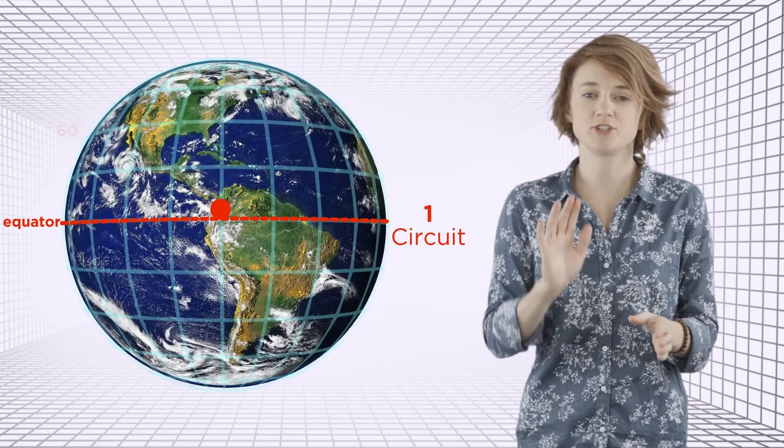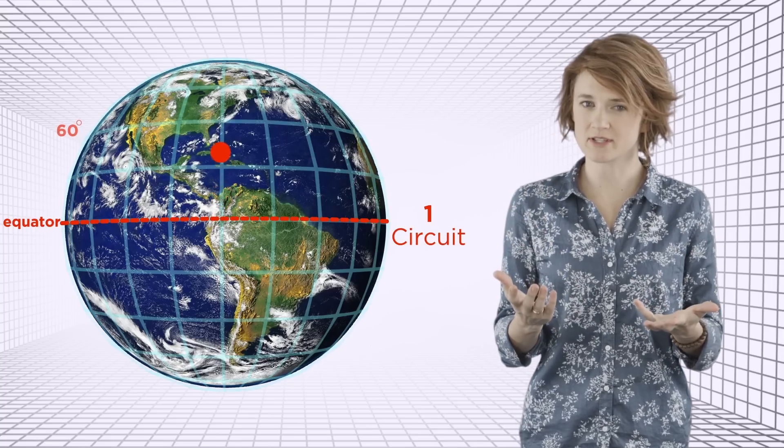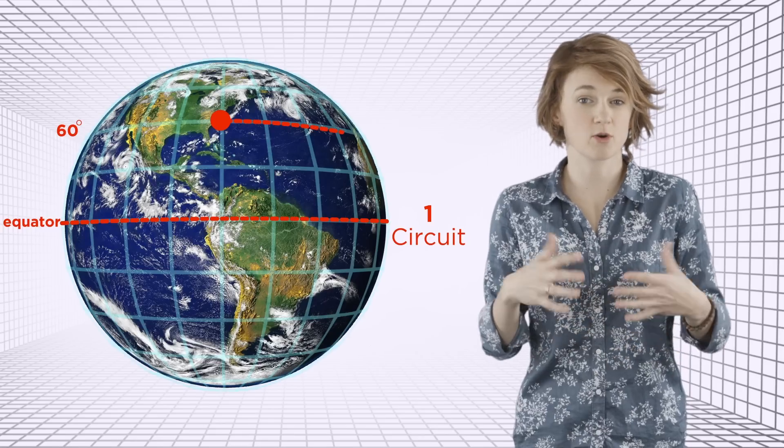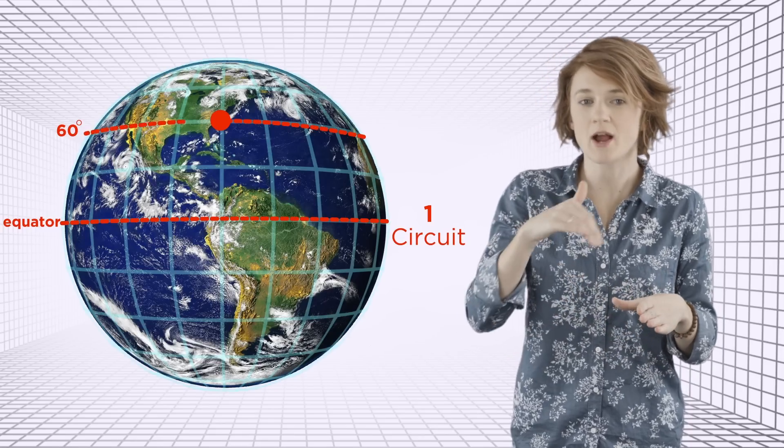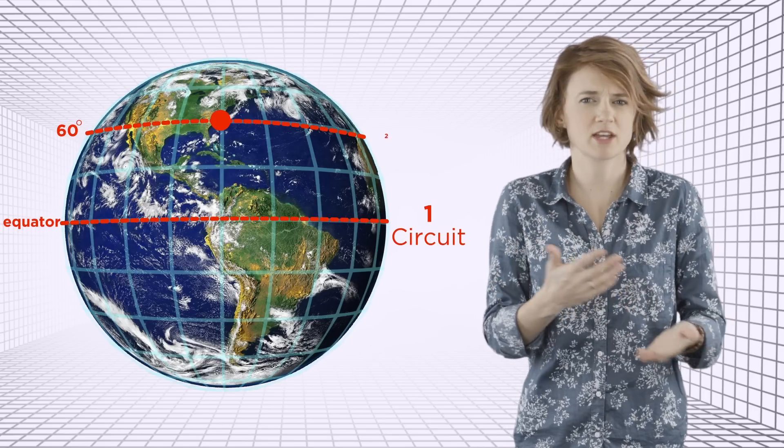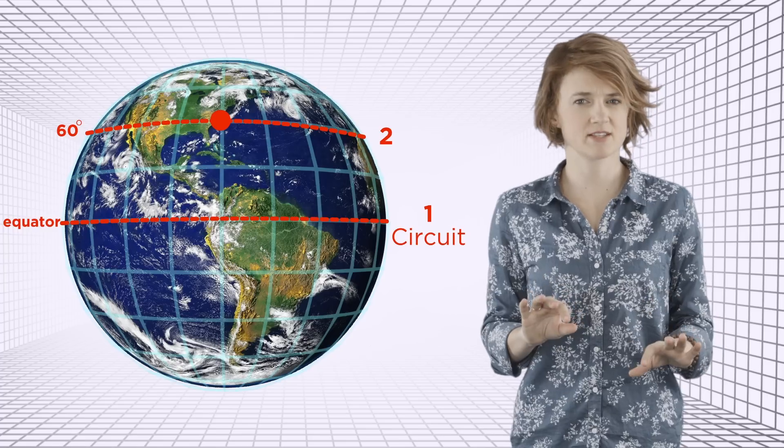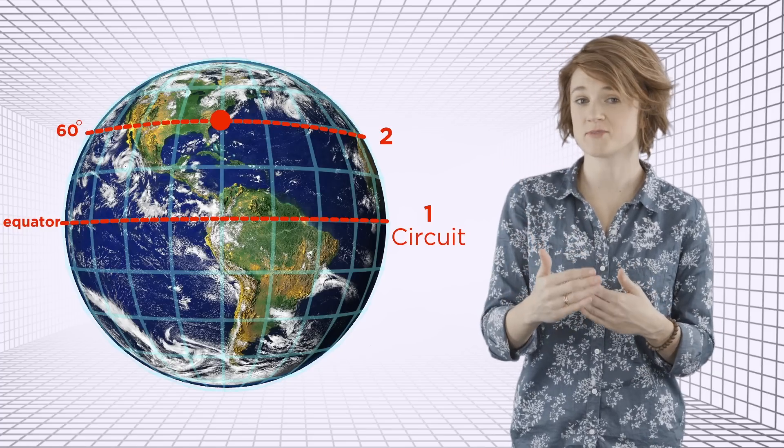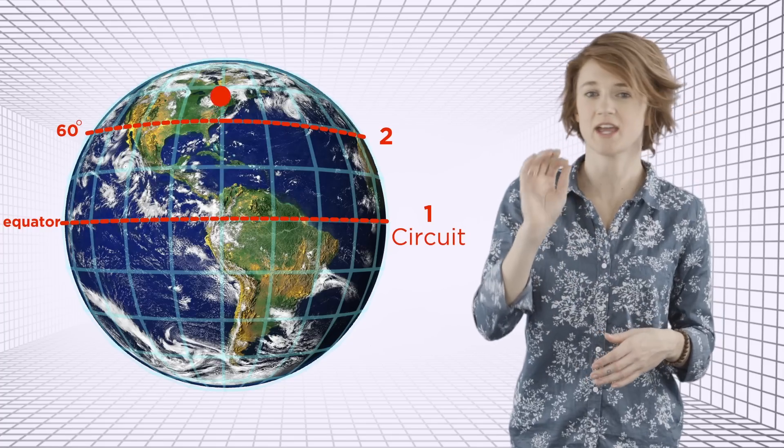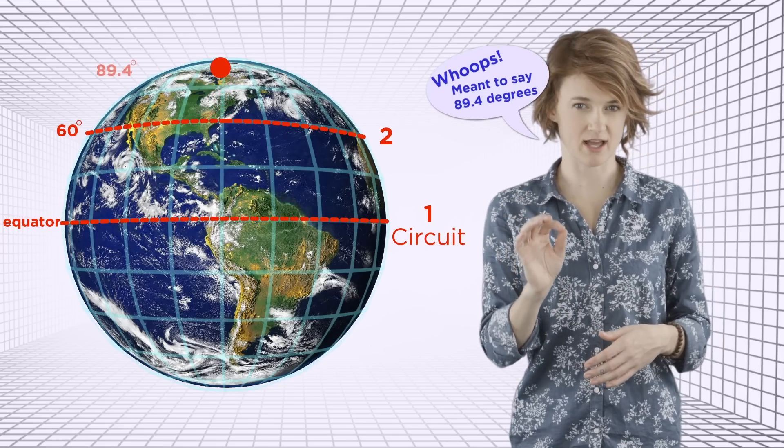Now, you walk due north to the 60 degree line of latitude. At the same speed you traversed the equator, you walk for 24 hours around the 60 degree line of latitude. Only this time, you make it all the way around twice. That is, you've cycled through all the time zones twice. Now, you trek way up north to the 89.99 degree line of latitude. Again, with the same speed, you followed the line of latitude for 24 hours. This time, you've made it through all the time zones 100 times.